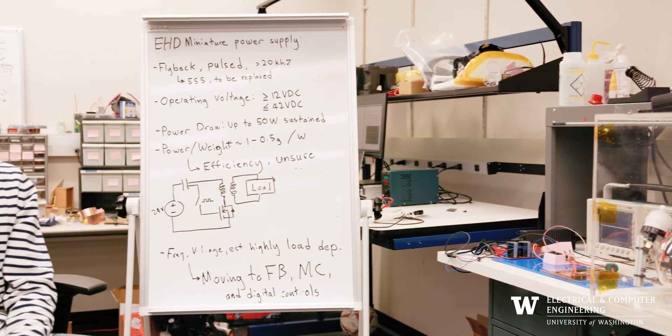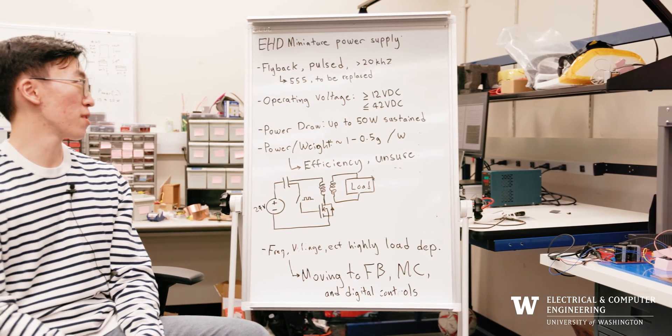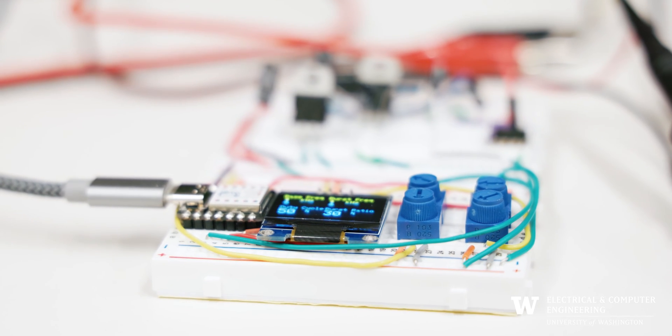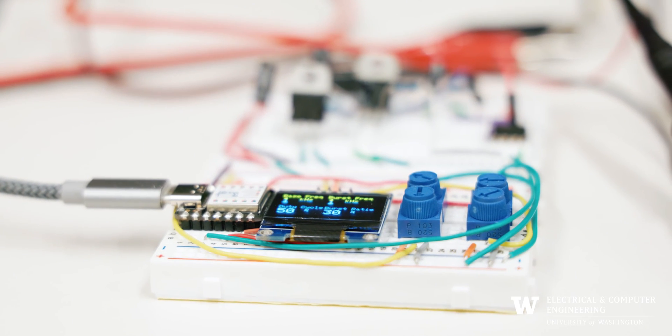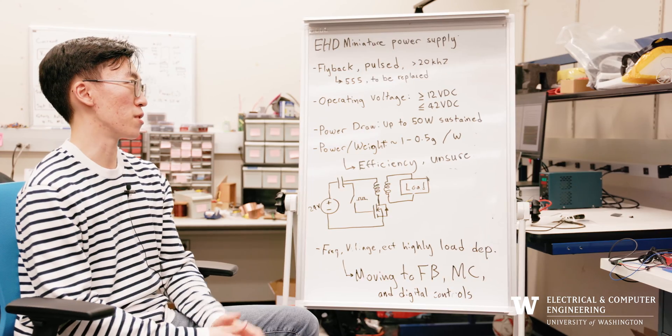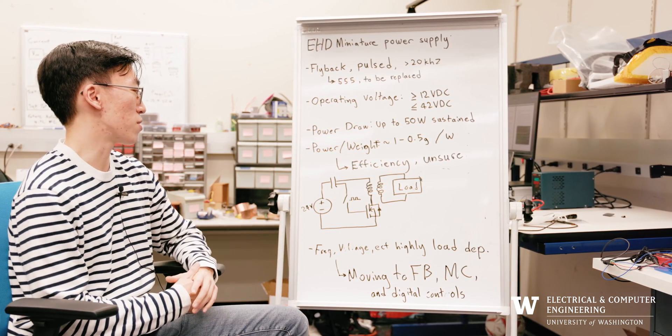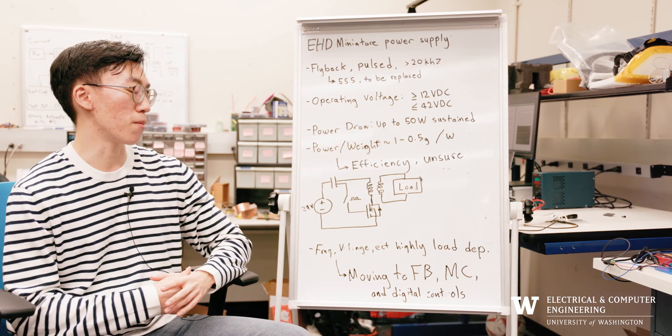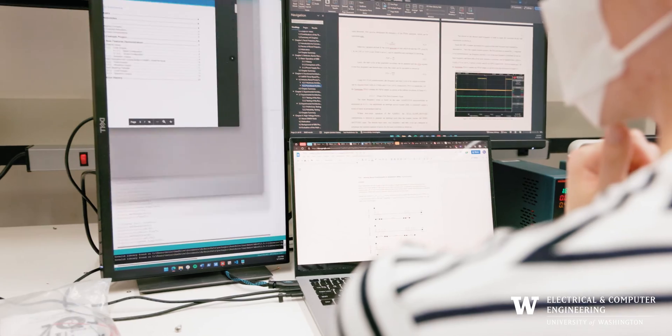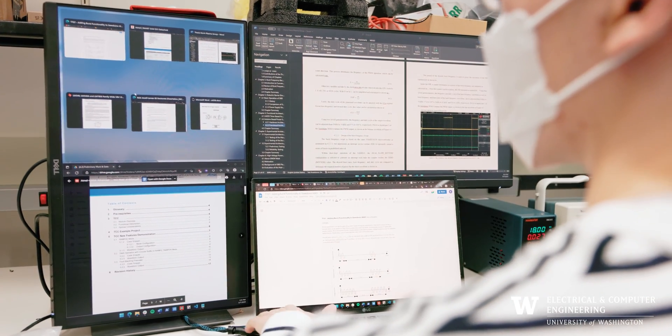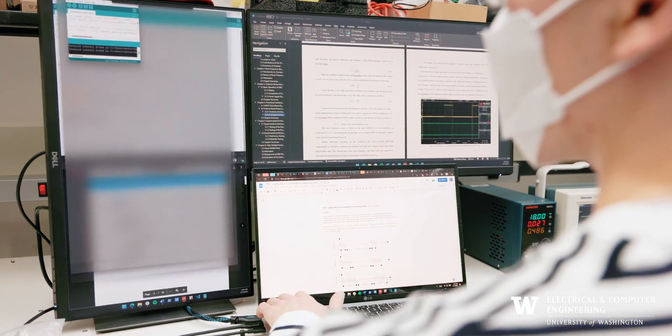This was our project goal for the winter quarter. So currently, our goal for the miniature power supply is incorporating a microcontroller to replace certain 555 timers or integrated circuits. And these are our operating voltages. And so we've been working on transitioning from a purely hardware perspective to incorporating some aspects of software so that it makes the power supply a lot more compact, more lightweight, as well as adjustable for different testing electrode configurations.